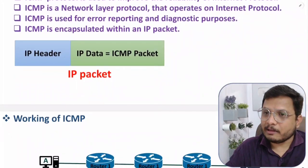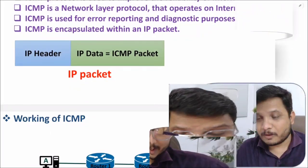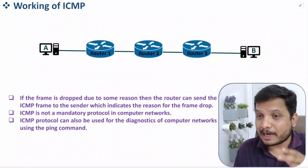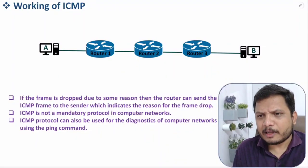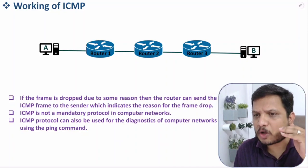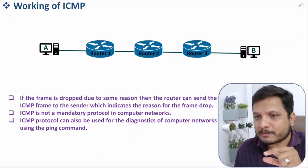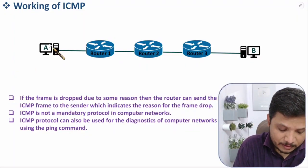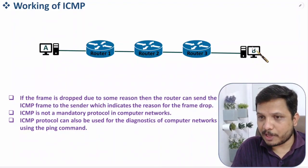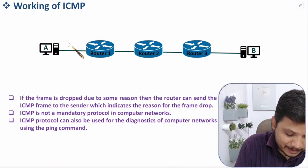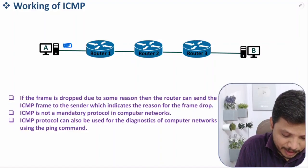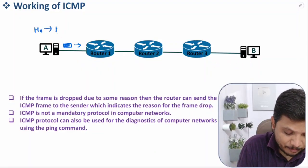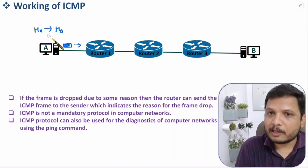Before explaining the working, note that ICMP protocol is not a compulsory protocol — it is optional. Now let me explain how ICMP functions with a practical example. Host A wants to communicate with Host B, so Host A is transmitting one frame towards Host B.